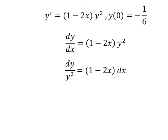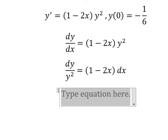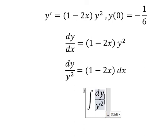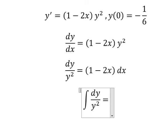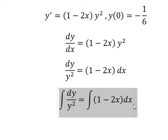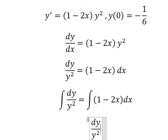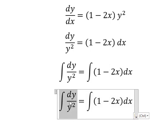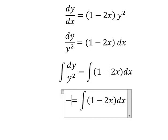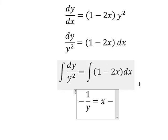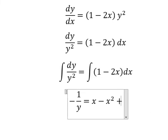Next I will put the integration for both sides. So the integration of this one, we have negative 1 over y. The integration of 1 we have x, this one we have x squared, and I will put C.